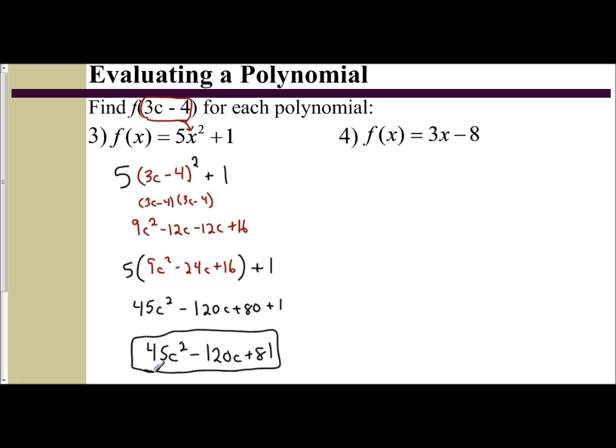So you can evaluate a polynomial for a variable expression. Just plug it in. Make sure you put in parentheses. Do your order of operations. We're going to do the exponents first. So we distribute. Get our trinomial. Then we're going to multiply by 5 and then combine or add 1.